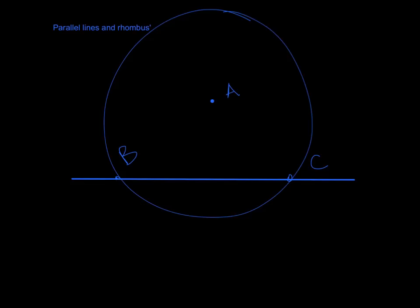Then, keeping the radius the same that you used to make your circle from point A, you create an arc through the line from point B and label that point D.